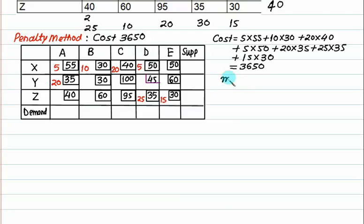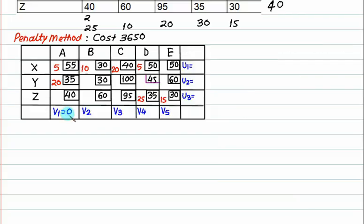M equals number of rows = 3, N equals number of columns = 5, so M plus N minus 1 equals 7. Check occupancy cells: 1, 2, 3, 4, 5, 6, 7 — exactly 7 occupied cells. This solution is ready for optimality check. Assign U1 equal to 0, then proceed using only occupied cells. For the occupied cell formula C = U + V: the first occupied cell has cost 55, U1 is 0, so V1 must equal 55.